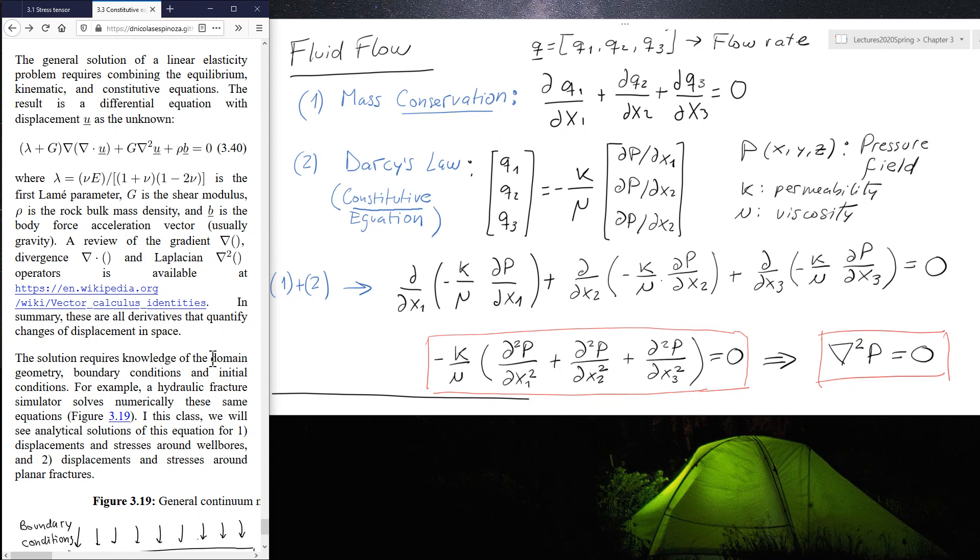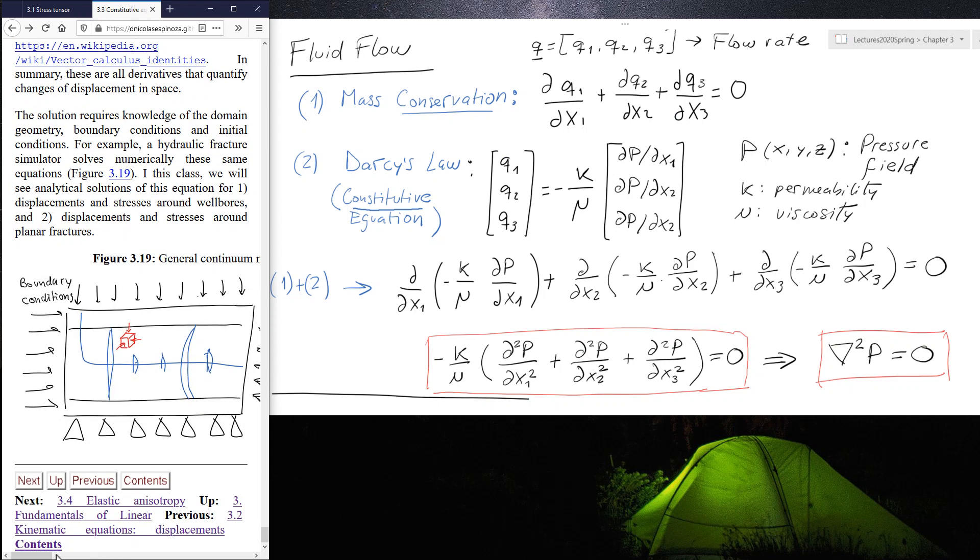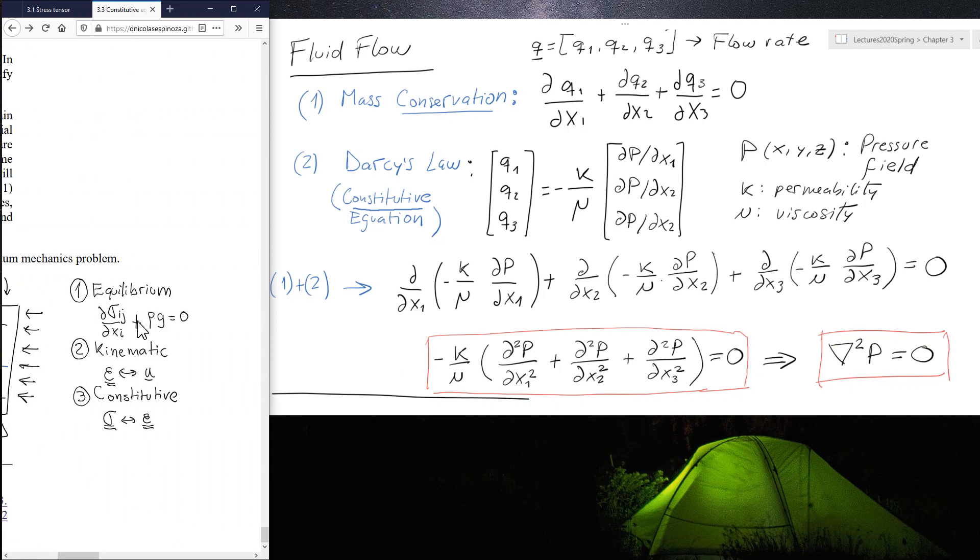And it's similar to our equilibrium equation because equilibrium equation is momentum conservation. And notice that similarly to the mass conservation, we have a derivative of the stress tensor with respect to space, which is ensuring this momentum conservation. And in this case is mass conservation.